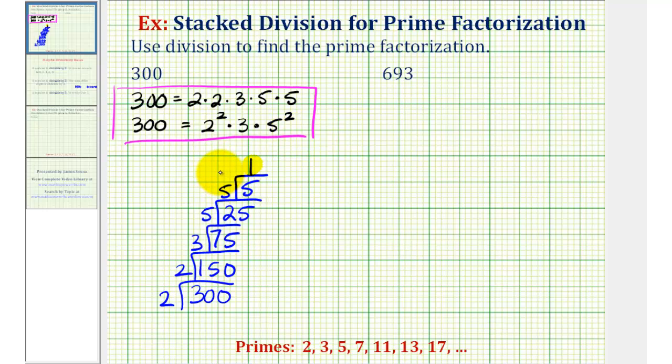Let's take a look at a second example. Now we want to find the prime factorization of 693. So we'll start with 693 at the bottom. Notice that 693 is not even, which means it's not divisible by two, so now we'll see if it's divisible by three.